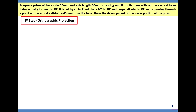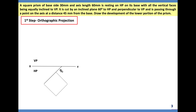Two steps. First step: orthographic projection. Draw the XY line. Since we are following the first angle of projection system, VP comes above XY — front view will be there — and HP comes below XY — top view will be there. The square prism is resting on HP with its base, and all vertical faces are equally inclined to VP — equally inclined means 45 degrees. Draw a construction line, use a protractor to make an angle of 45 degrees.